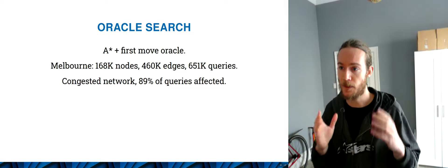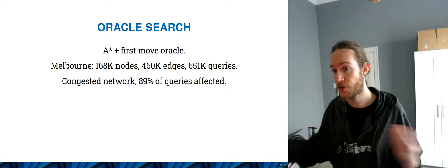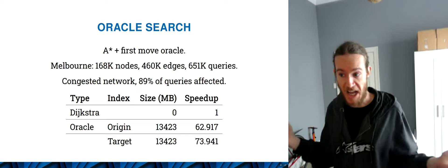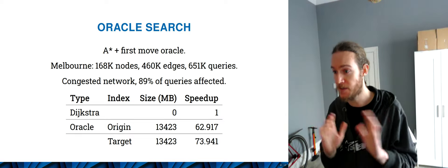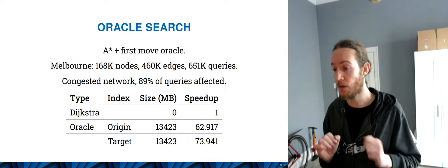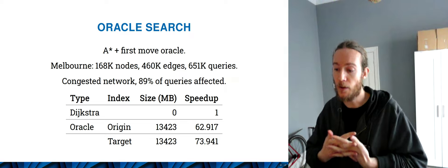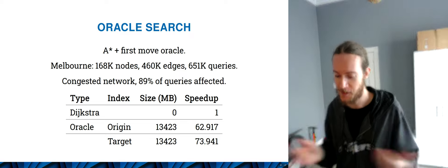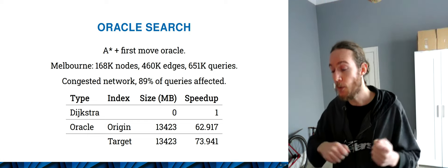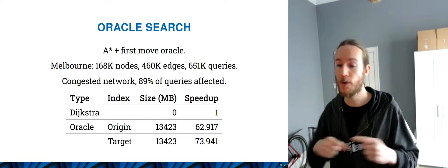In summary, Oracle Search is a combination of A* with a first-move oracle. Running on Melbourne with about 90% of queries affected, our baseline is Dijkstra — no pre-computation, zero index size, speed of one. Using an origin index, we're already 63 times faster than Dijkstra. But if we index by target, not only do we get better memory behavior, we also get better cache behavior in the search — 20% faster than the origin index. This is purely data locality: we query one row and don't need to go back and forth to the table.